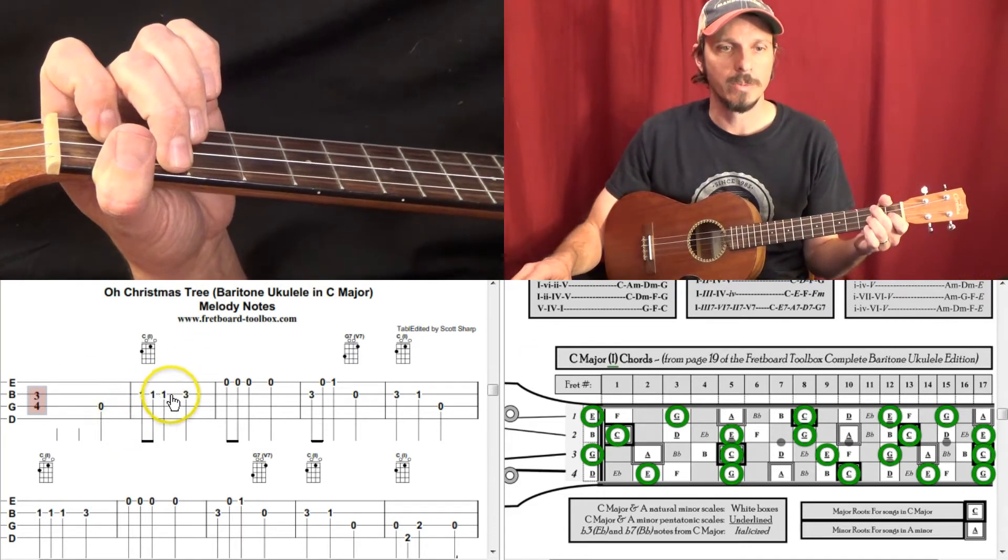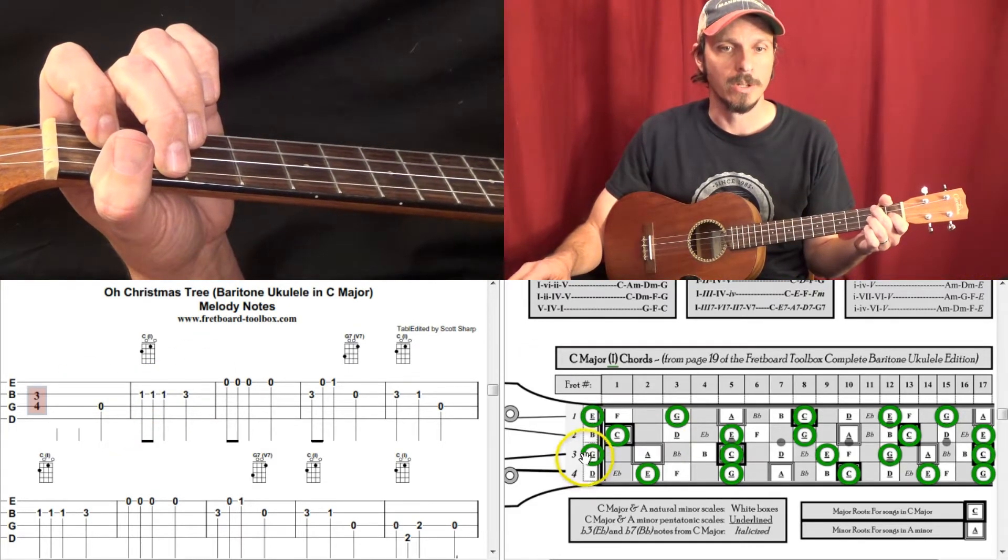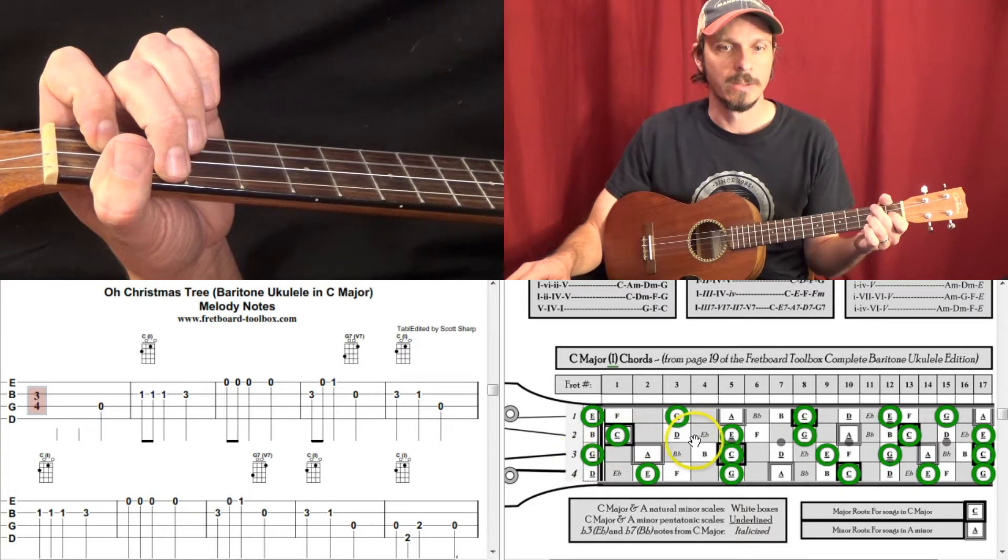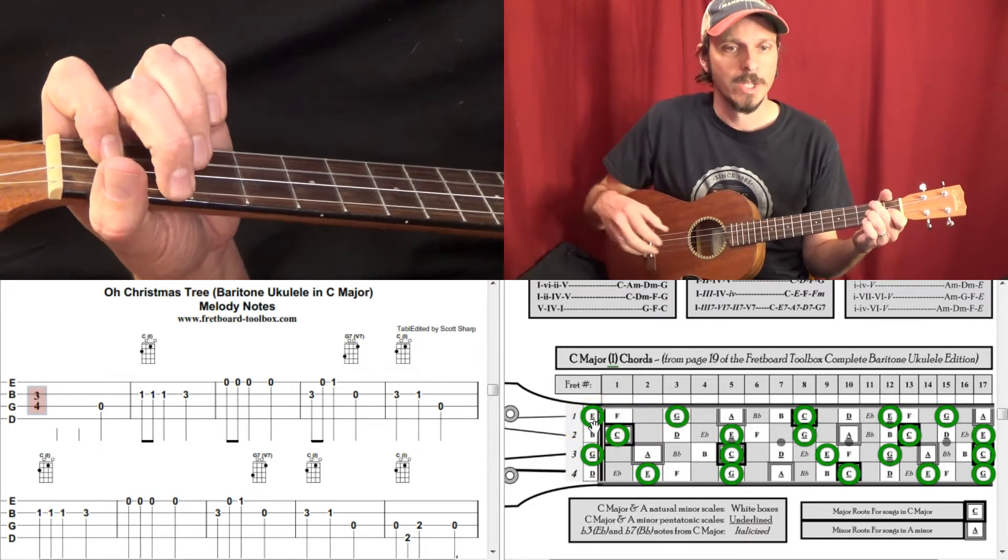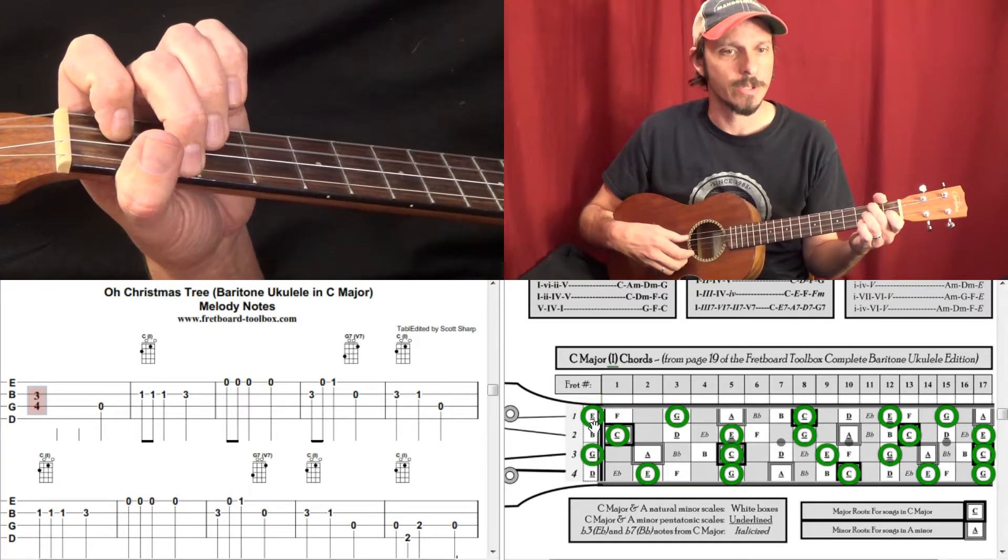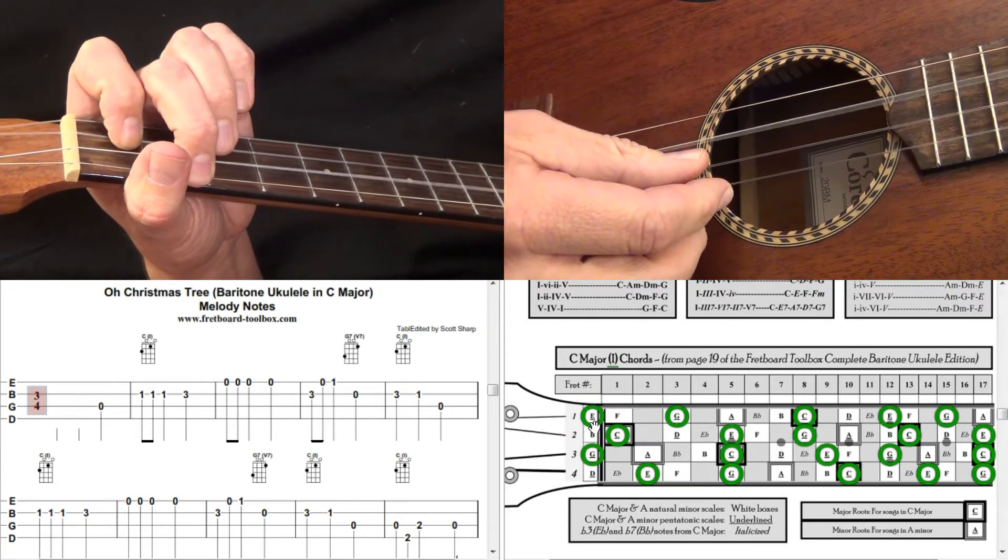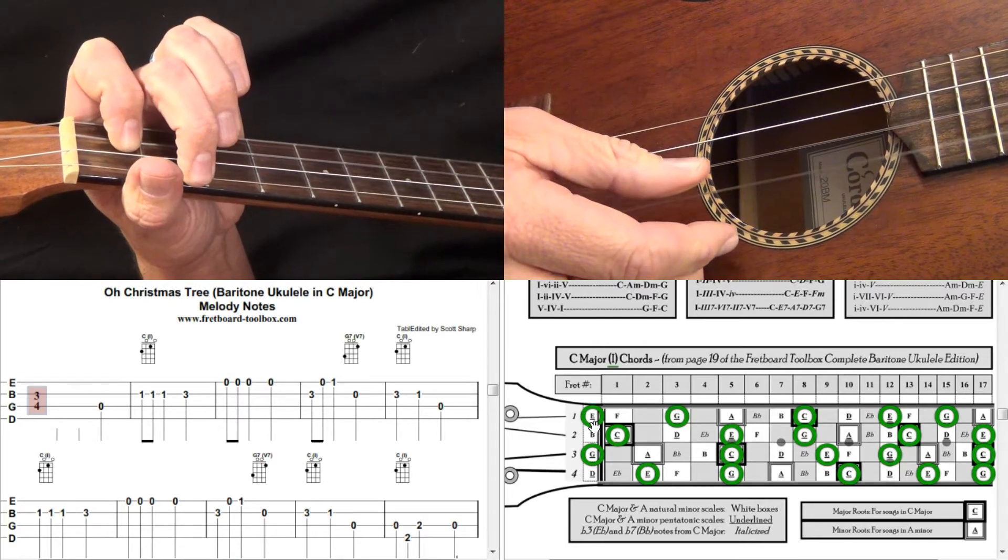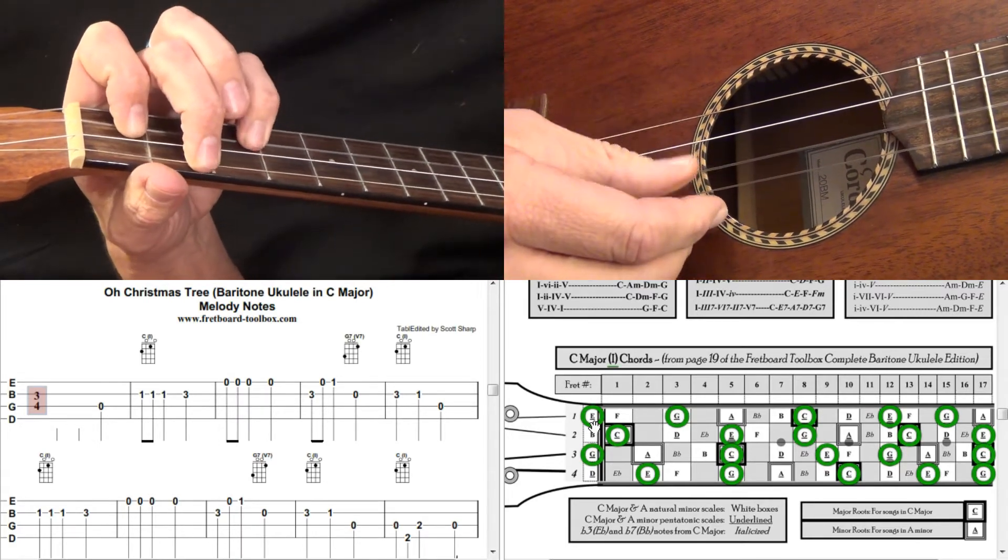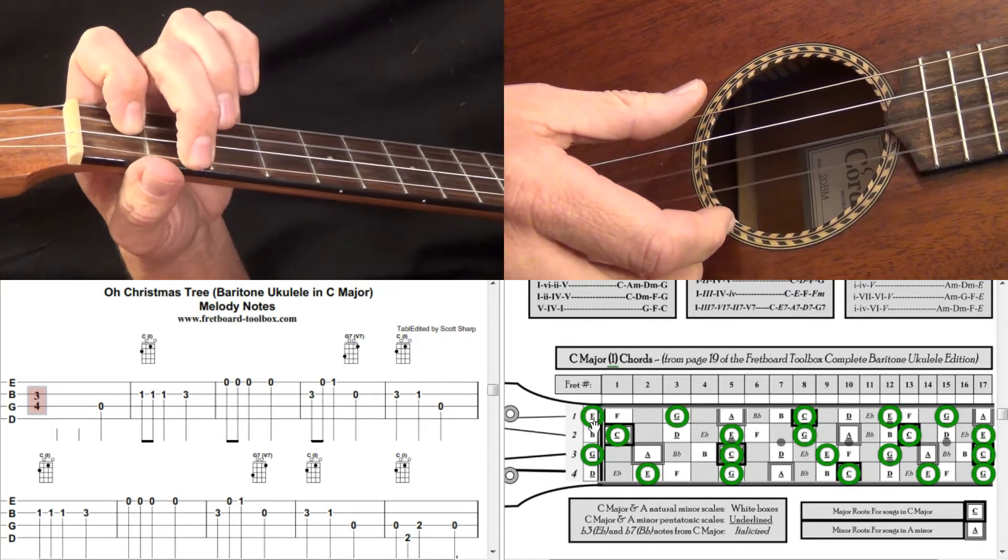So let's play the first couple measures here. So that's open, 1, 1, 1, 3. So open, 1, 1, 1, 3, which is D. And then open, open, open are E's. So let's play the first four measures here. So notice how I'm still getting that D note off of my C shape here.